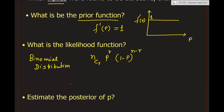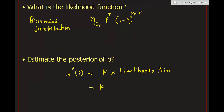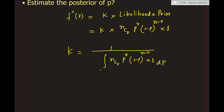The posterior distribution is f''(P) = K × likelihood × prior = K × nCr × P^r × (1−P)^(n−r) × 1, where K is the normalization constant given by 1 divided by the integral of nCr × P^r × (1−P)^(n−r) dP from 0 to 1.